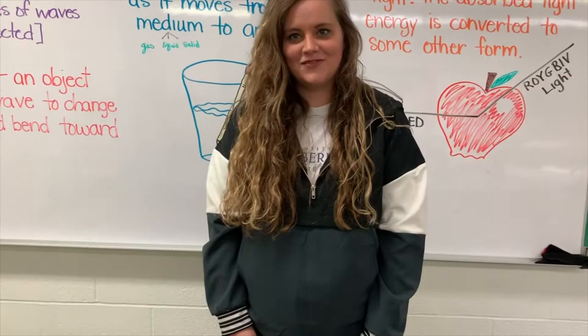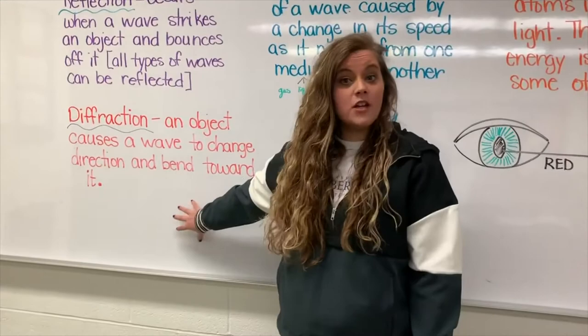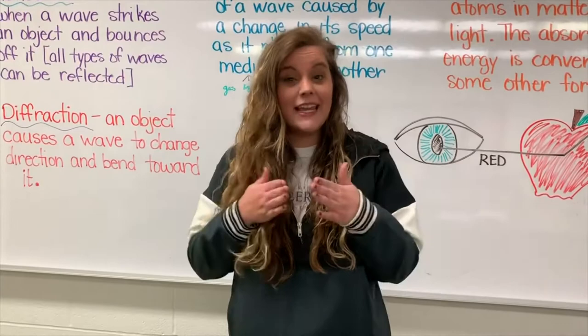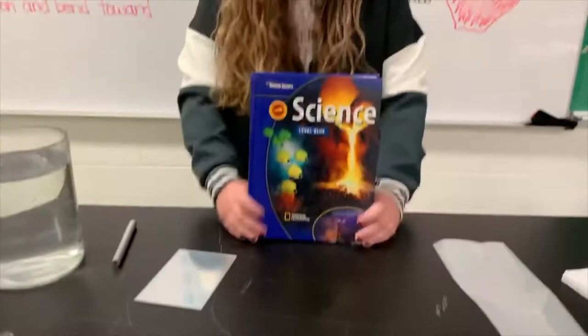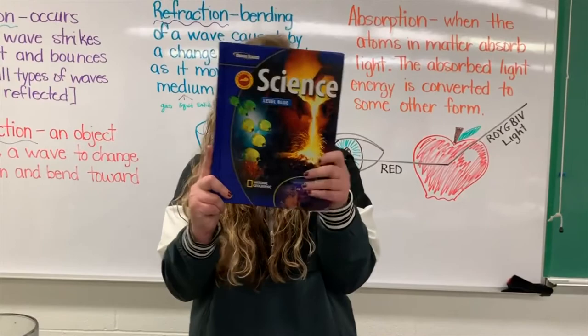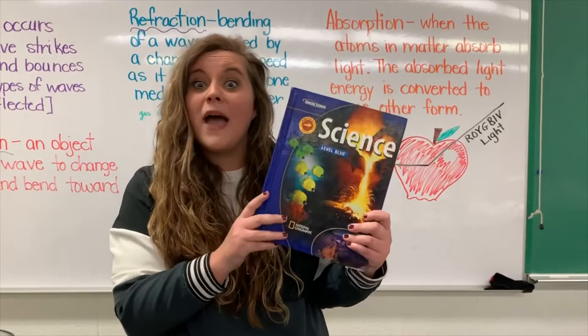Ms. Jones just talked about diffraction. Now I'm going to talk about transmission. Transmission is the ability for light to pass through an object. Can it go through that object? First, can you see me through this textbook? No, you cannot see me through the textbook because light cannot travel through it. This is considered opaque — opaque means you cannot see light through an object or matter.